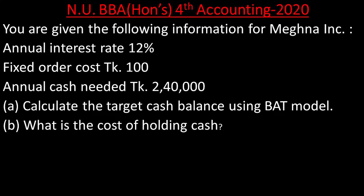Annual interest rate 12%. Fixed order cost: 100. Annual cash needed: 2,40,000. We are going to talk about the fixed order cost. Calculate the target cash balance using the BAT model.